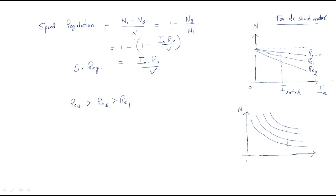In the DC shunt motor, when the armature current increases, the speed will slightly decrease. When the external resistance is more, speed will be less; when external resistance is slightly decreased, speed will be higher. So observe that external resistance high means speed will be high, and this will be low at the rated points. Now if we consider the same characteristics for the DC series motor.